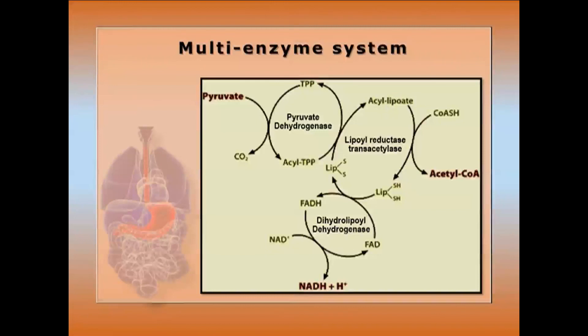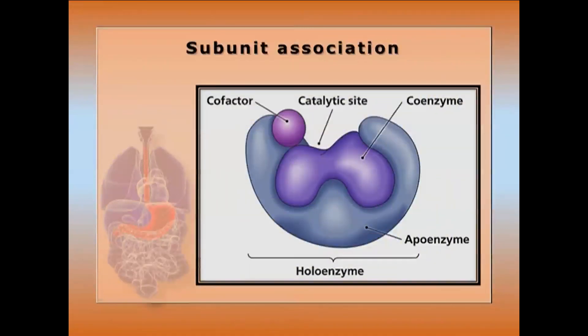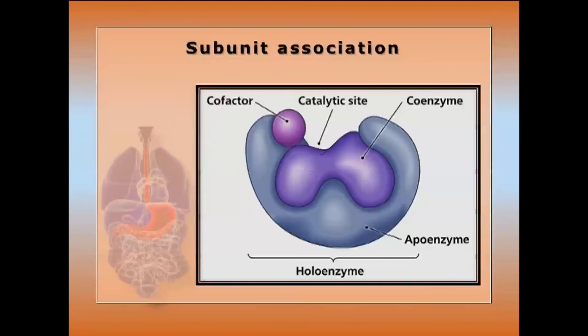Multi-enzyme systems: some enzymes aggregate in a mosaic fashion, coupling reactions together so the product of one enzyme acts as substrate for the next. An example is the pyruvate dehydrogenase system, consisting of pyruvate decarboxylase, dihydrolipoic dehydrogenase, and lipoyl reductase-transacetylase. In subunit association, metal ion cofactors like Mg²⁺ are needed for hexokinase. Competitive inhibitors bind to the active site; uncompetitive inhibitors bind to the enzyme-substrate complex; non-competitive inhibitors bind to the regulatory site to modulate activity.